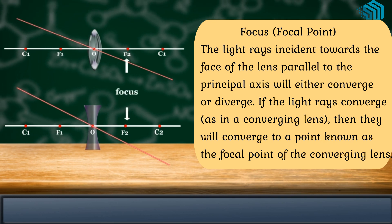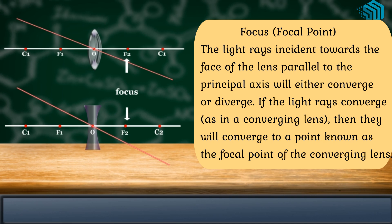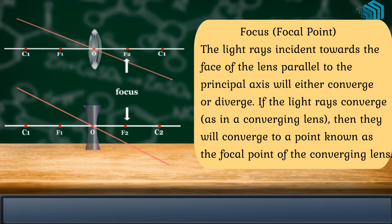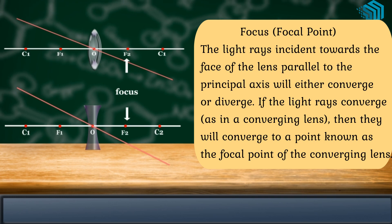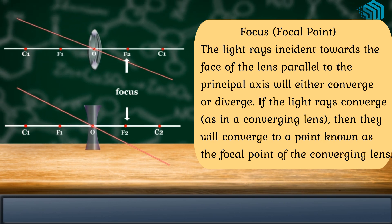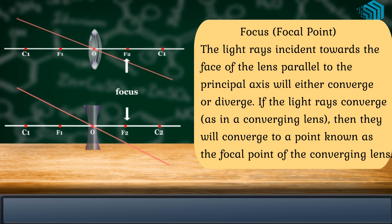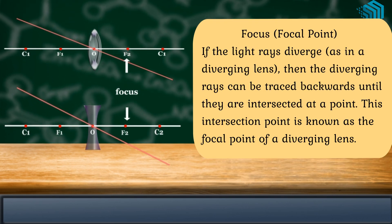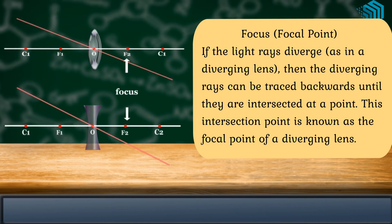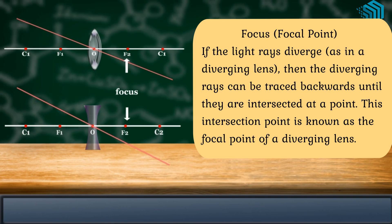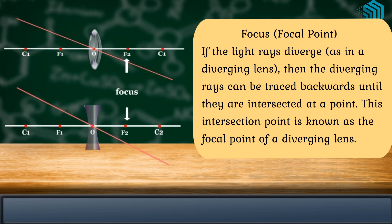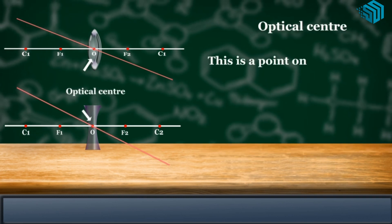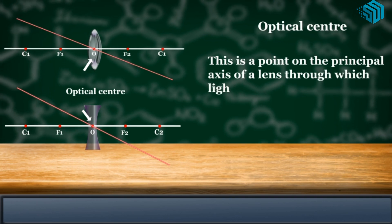Focus, which is also known as focal point. The light rays incident towards the face of the lens parallel to the principal axis will either converge or diverge. If the light rays converge, as in the converging lens, they will converge at a point known as the focal point of the converging lens. If the light rays diverge, as in a diverging lens, the diverging rays can be traced backwards until they intersect at a point, known as the focal point of a diverging lens.